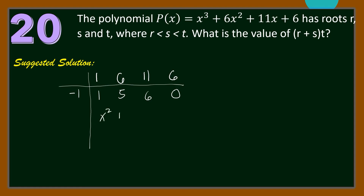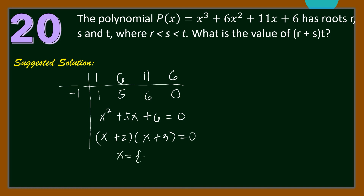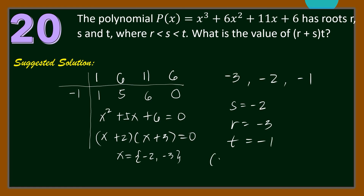We can factor x² + 5x + 6 as (x + 2)(x + 3) = 0. Therefore, the other two roots are −2 and −3. In ascending order, we have −3, −2, −1. Hence, r = −3, s = −2, and t = −1. So (r + s) · t = (−3 + (−2)) · (−1) = (−5) · (−1) = 5.